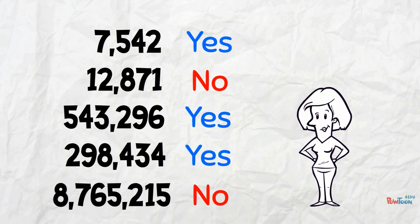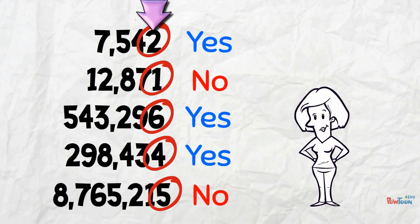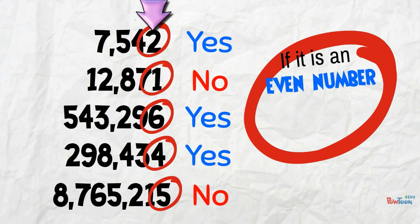If not, do you remember what I said? We just have to check this last digit here, the ones column. If it's an even number, then 2 is a factor.